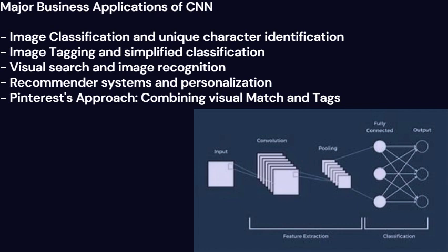Pinterest's Approach: Combining Visual Match and Tags. Pinterest adopts a different approach, combining CNN-based visual matching with image tagging. The platform relies on matching visual features to provide straightforward visual matches and augments the recommendations with tags to enhance accuracy further.